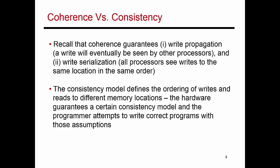Cache coherence — we looked at snooping-based and directory-based cache coherence — guarantees two conditions. The first is write propagation, which says that when I make a change, everyone will eventually see that change. The second is write serialization, which says that for a given variable, if you write 5 and then 7 into memory location A, everybody sees those writes in exactly the same order: first 5, then 7.